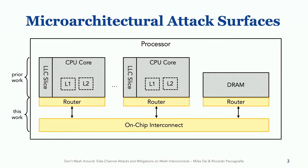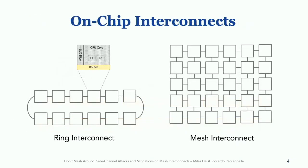Previously, the on-chip interconnect was thought to be an infeasible attack surface and is largely ignored by existing defenses. On-chip interconnects come in a variety of different topologies. Prior work studying interconnects has focused primarily on client-class processors, which might use smaller interconnects like the ring. In our work, we study a much larger interconnect, since vendors are increasingly moving to these larger topologies as processor core counts continue to increase. Specifically, we study the mesh interconnect found on the latest Intel server processors.